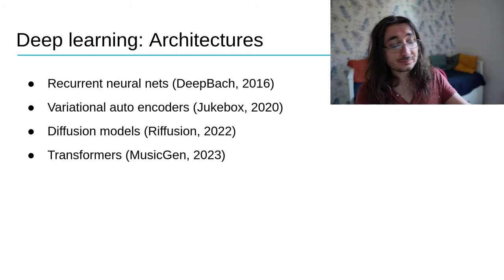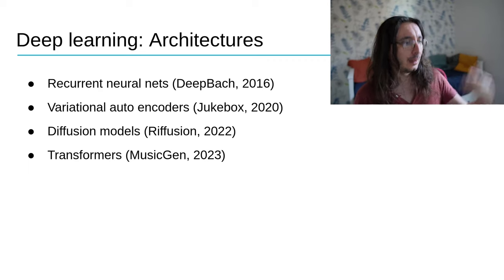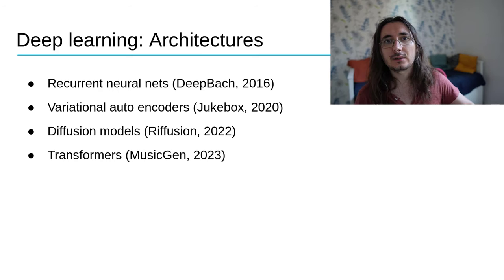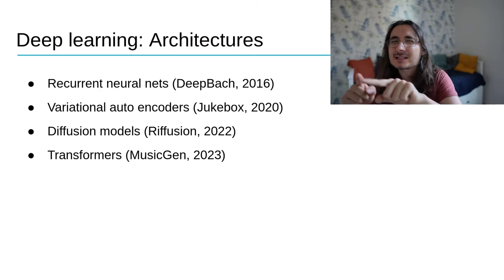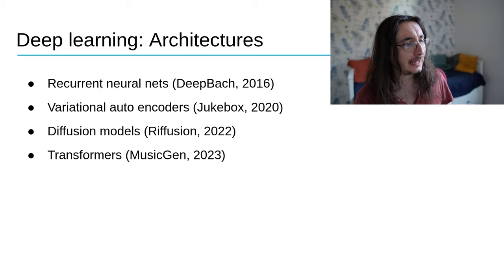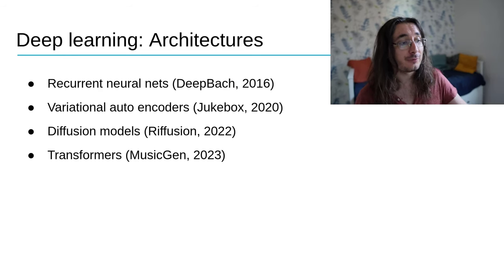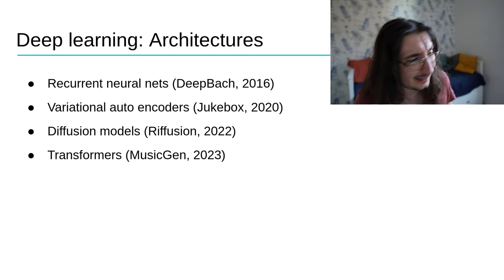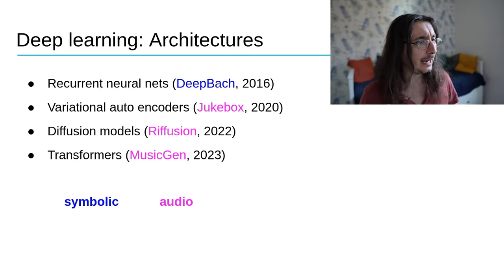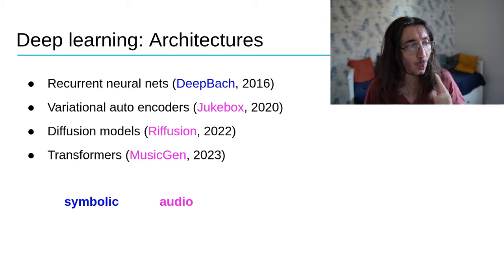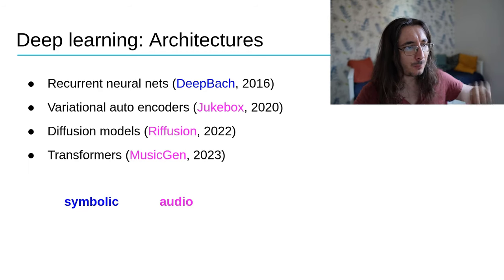Here are four architectures extensively used for generating music: recurrent neural networks like long short-term memory (LSTM) networks, variational autoencoders, diffusion models, and transformers. There's an example for each: DeepBach for RNNs, Jukebox for VAEs, Riffusion for diffusion models, and MusicGen or MusicLM for transformers. DeepBach is the only system operating in the symbolic domain — all others operate in audio.